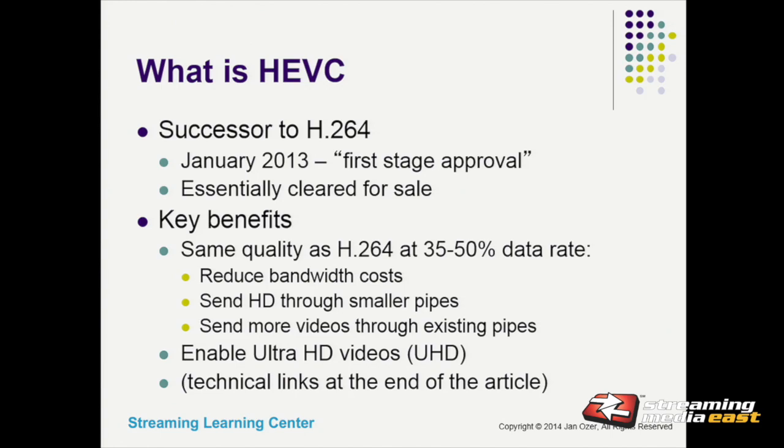I'm going to go through the early stuff quickly because I think everybody knows this. HEVC is the successor to H.264. In January of 2013 it was cleared for first-stage approval, meaning we can start selling and using it. The key benefit is the same quality as H.264 at between 35% to 50% data rate reduction — that lets you reduce bandwidth costs, send HD video through smaller pipes, or send more video through existing pipes. The other high-level benefit is the ability to produce ultra-high-definition video efficiently.